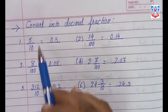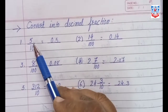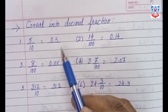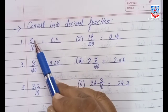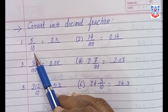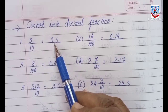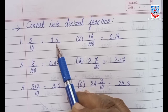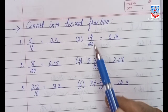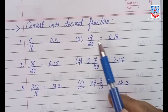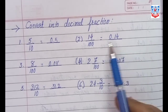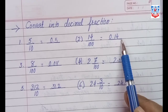Next, convert into decimal fraction. For 5 by 10: the denominator is 10, which has one zero, meaning after the decimal point there will be 1 digit — so the answer is 0.5. For 14 by 100: the denominator is 100, which has two zeros, so after the decimal point there will be 2 digits — that is 0.14.